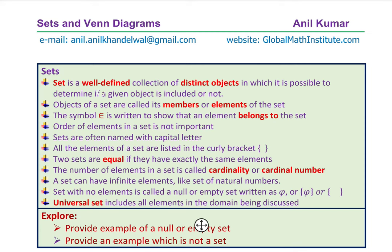It is a well-defined collection of distinct — unique, separate — objects. For example, if we have a word like COOL, then the set with letters in COOL will only have three letters: C, O, L. The repeated O will not be represented as a member of the set. It is also a good time to think about something which is not a set.